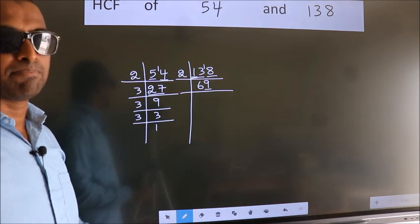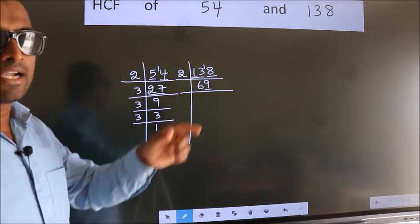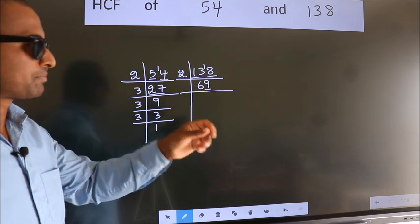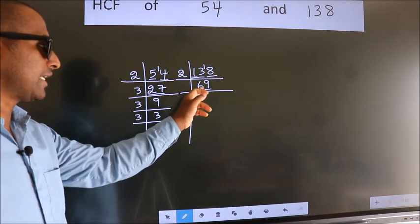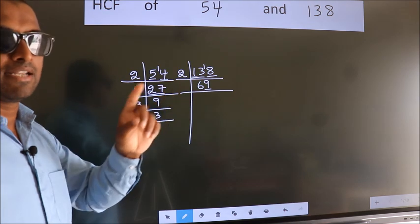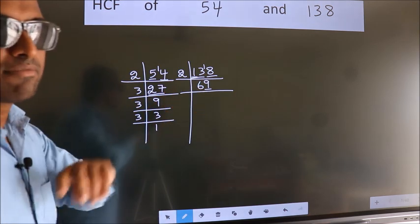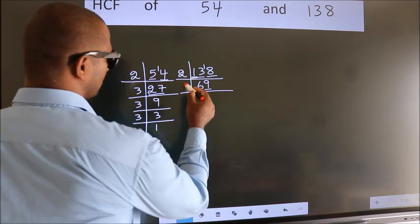Next prime number 3. To check divisibility by 3, for that we add the digits. 6 plus 9, we get 15. Is 15 divisible by 3? Yes. So this number is also divisible by 3. So take 3.